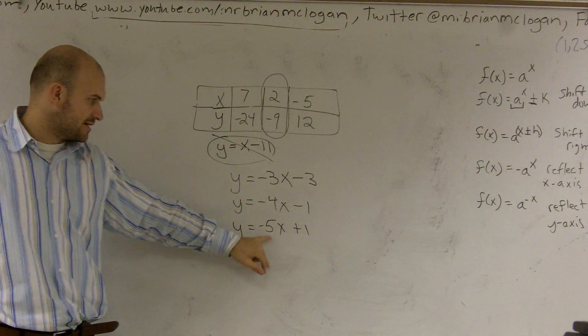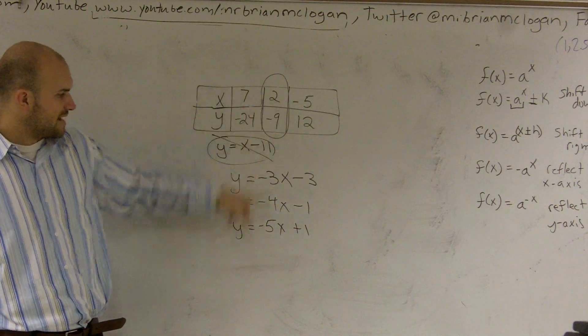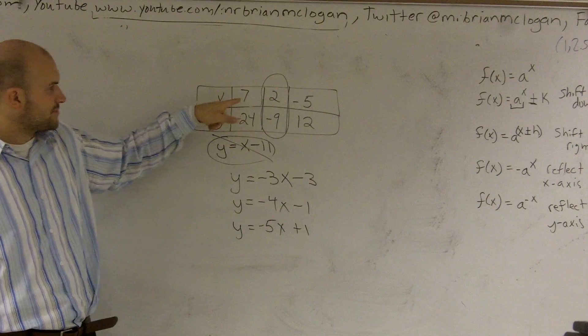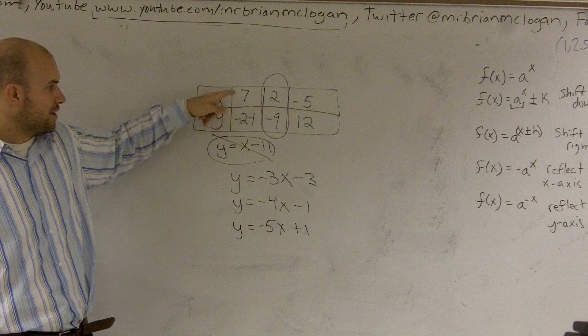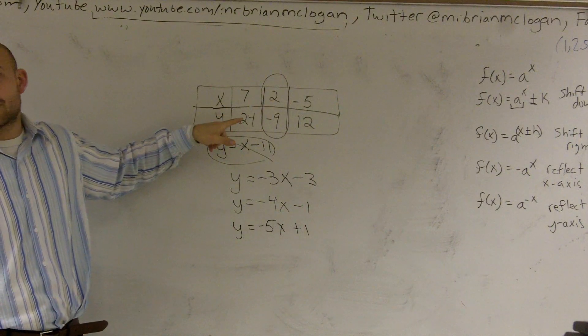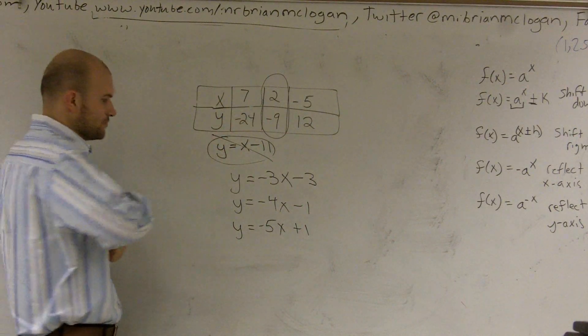So let's go start down here. Let's do negative 2 times negative 5. That works. How about we do this one? 7 times negative 5 is negative 35. Plus 1 would be negative 34, which is not that. So this rule does not work.